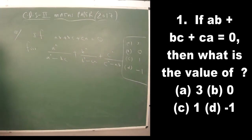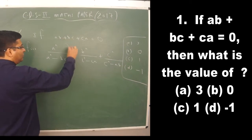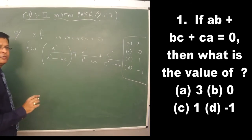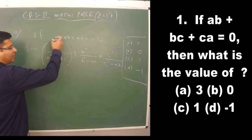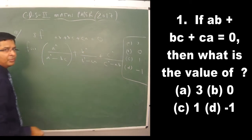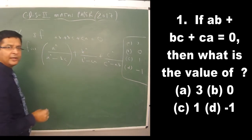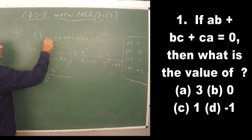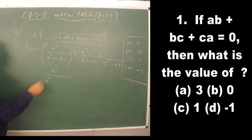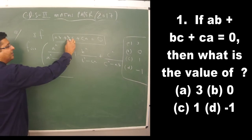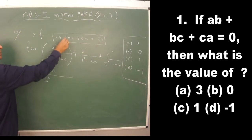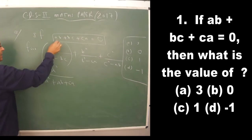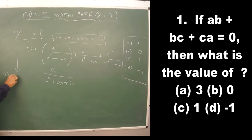The question follows a cyclic pattern. From the given equation ab + bc + ca = 0, shifting bc to the other side gives −bc = ab + ca. This substitution will be used to simplify the denominator of the first term.